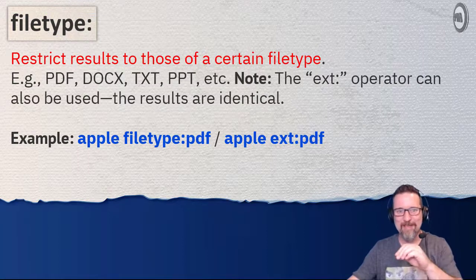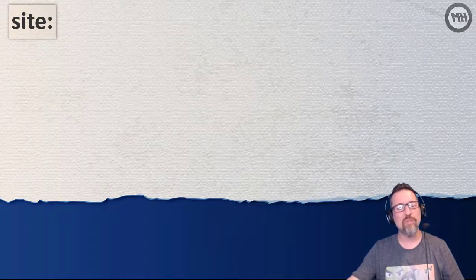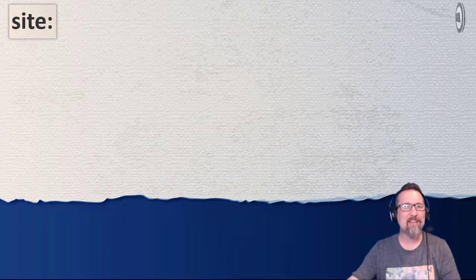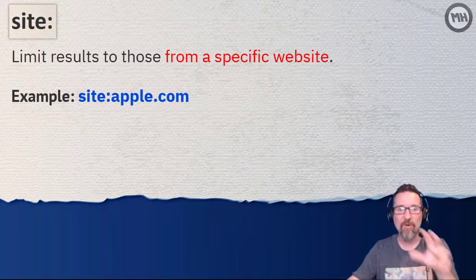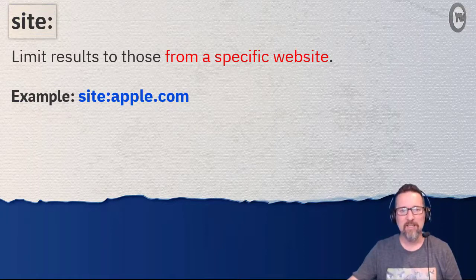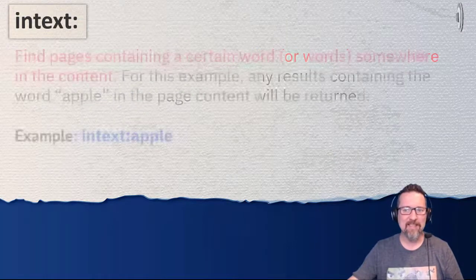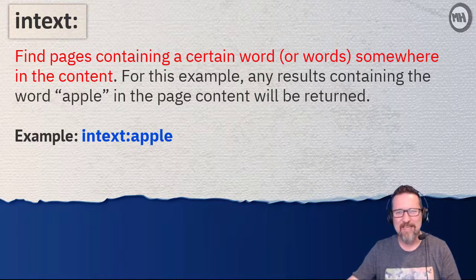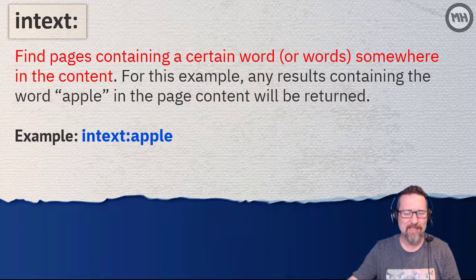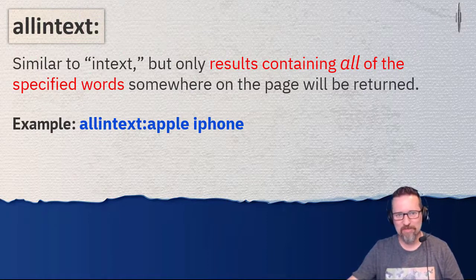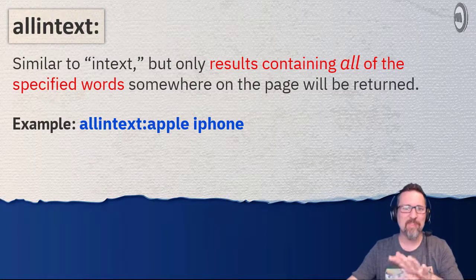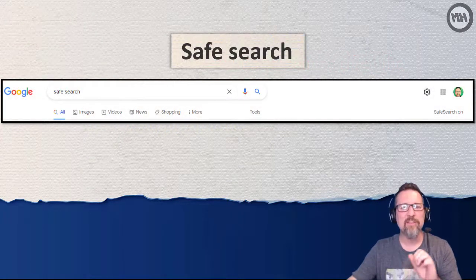The 'site:' operator lets you search a specific website for particular terms or phrases — it will only search that website rather than the entire internet. Then 'intext:' lets you find certain words contained within page content. You can also use 'allintext:' which will look for all of the words you've typed in on a particular page you might be searching for.